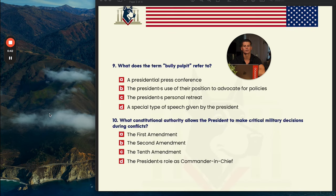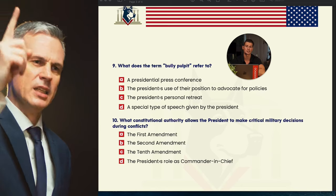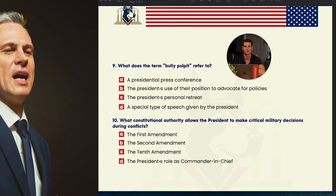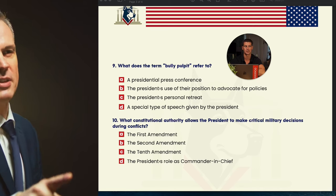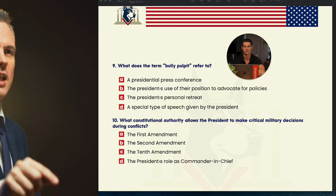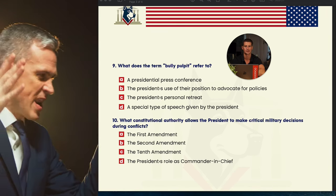Number nine: what does the bully pulpit refer to? A is the presidential press conference, B is the president's use of their position to advance policies, C is the president's personal retreat, and D is a special type of speech. A lot of times when you think about the bully pulpit it involves speeches, but that's not quite what it means. B is the correct answer — the president's use of their position to advocate for policies. The president uses their public-facing role to leverage Congress and push their agenda.